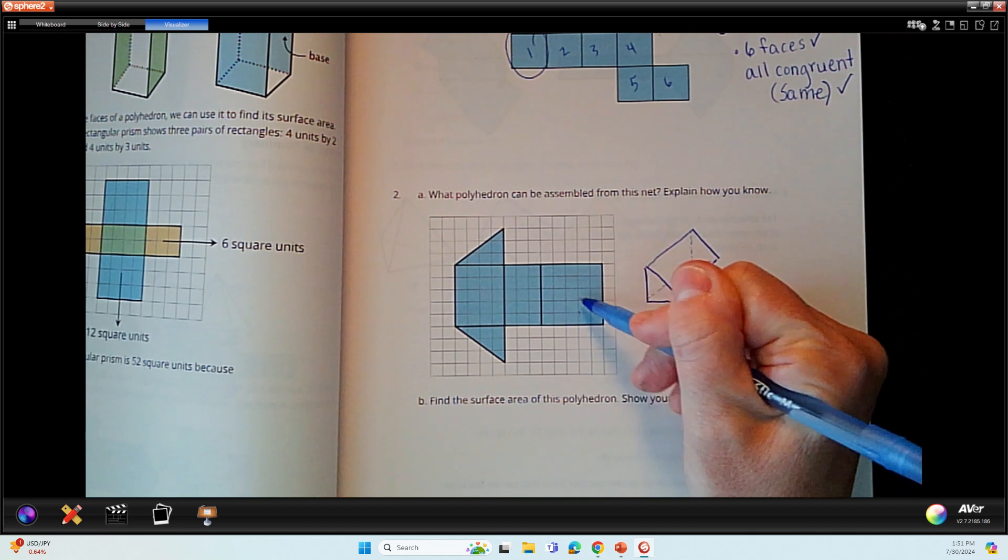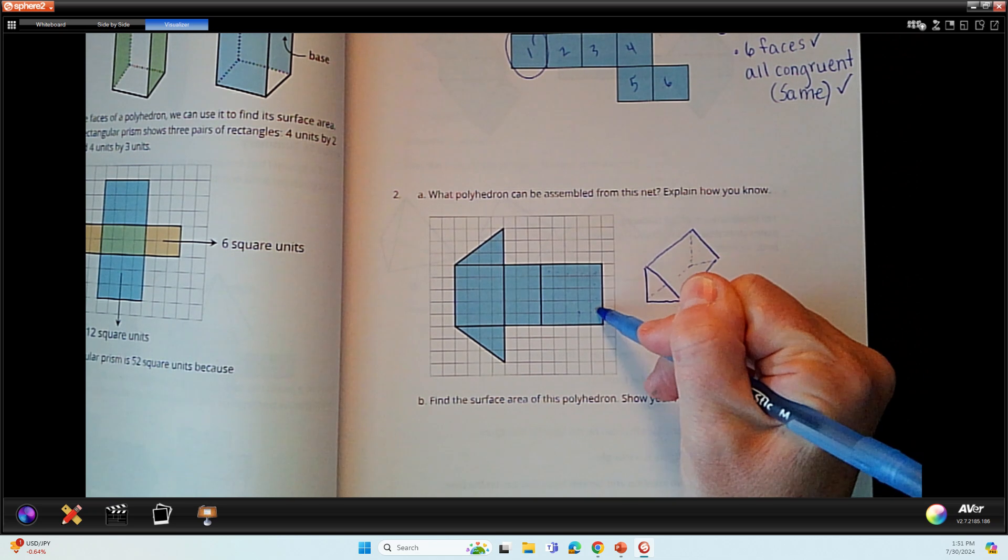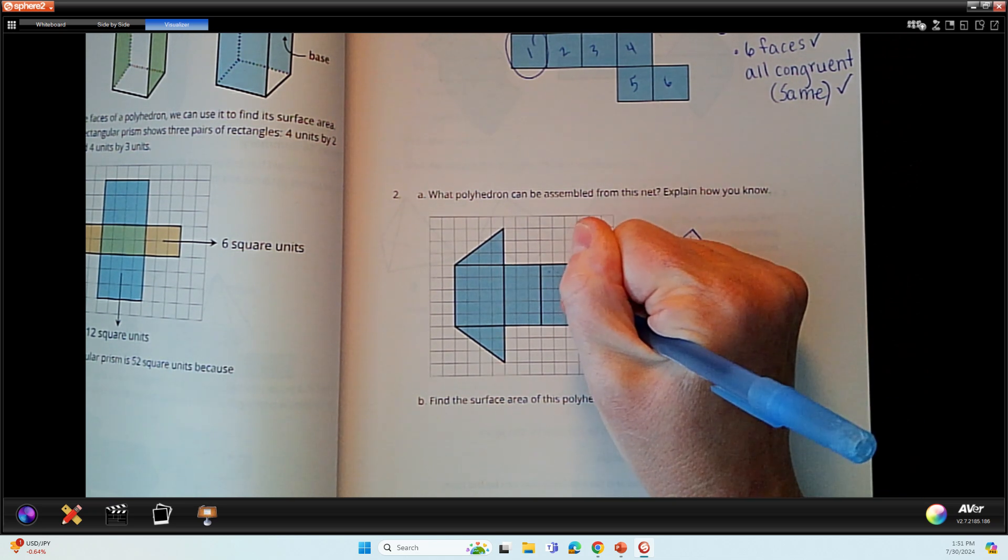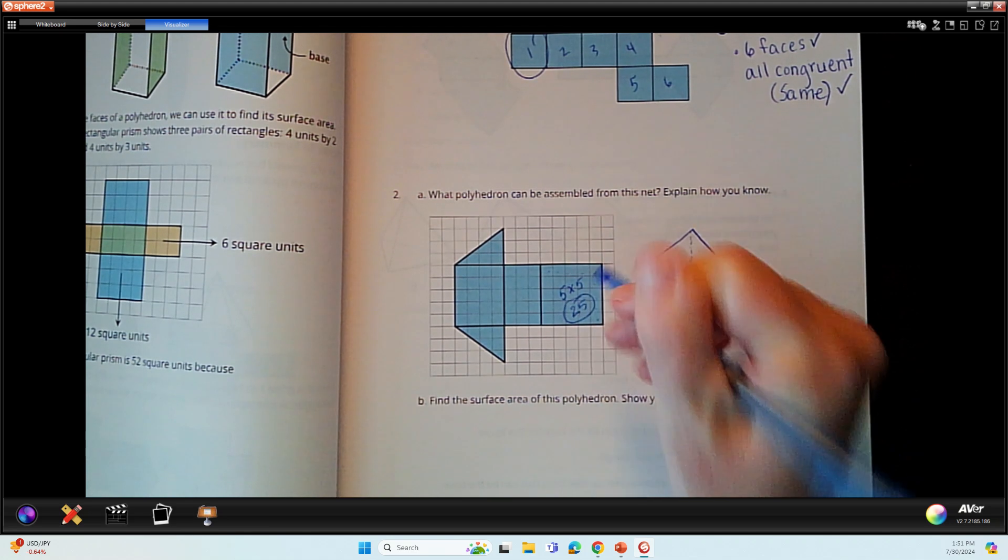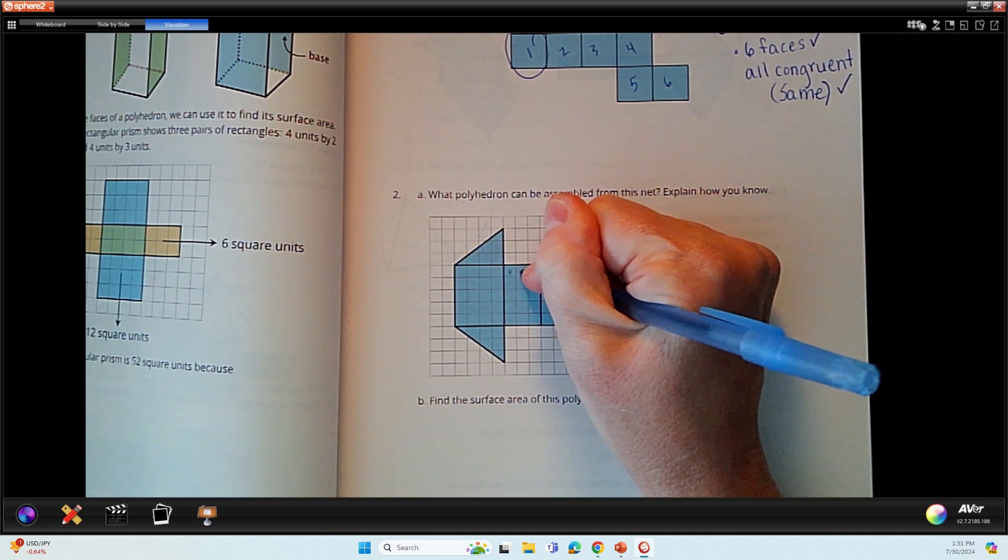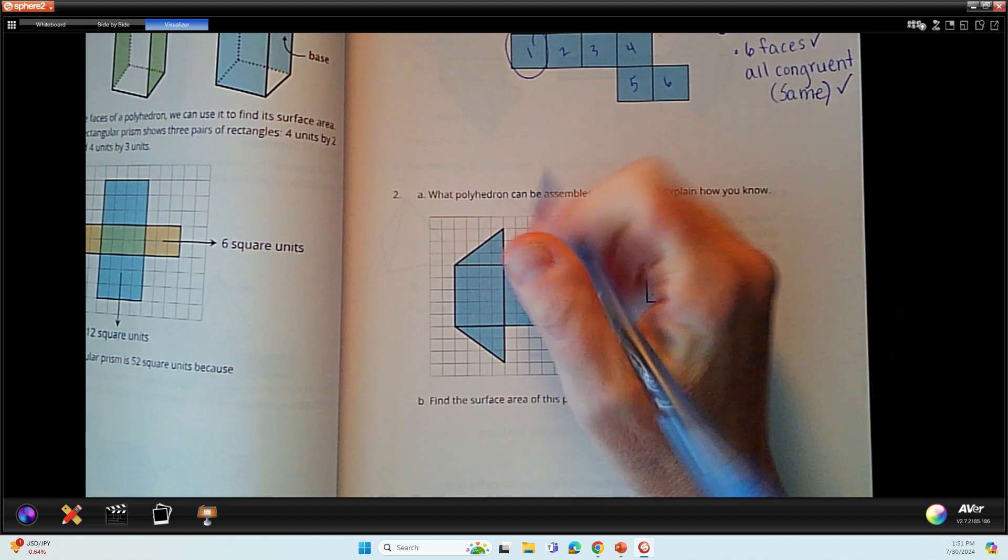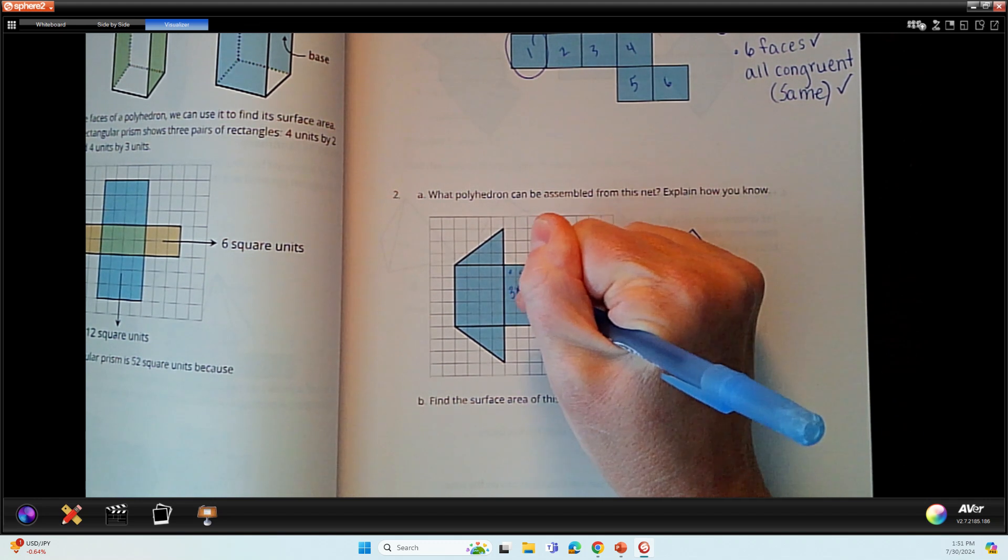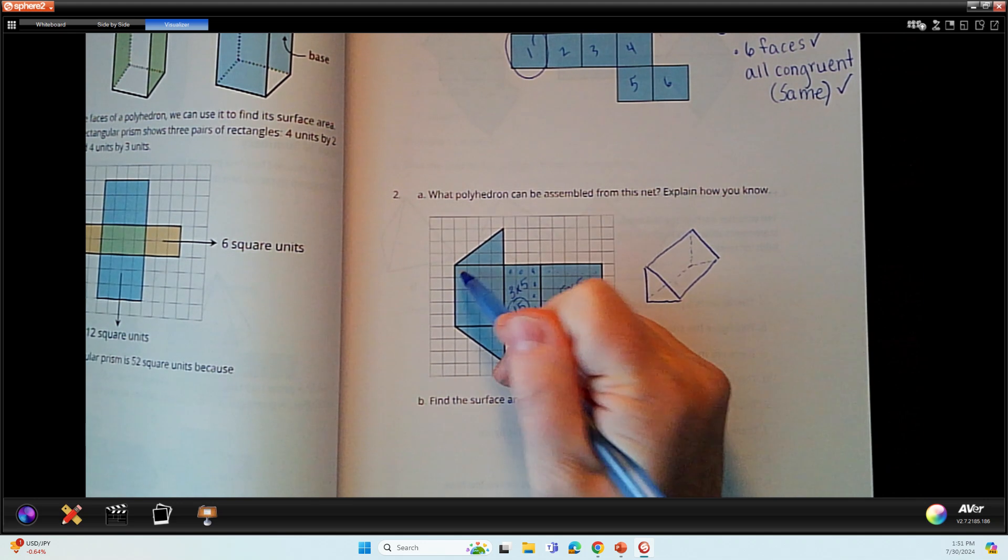So I can see, here's one of the faces. 1, 2, 3, 4, 5 by 1, 2, 3, 4, 5. So I'm going to write in here 5 times 5, which is 25, and I'm going to circle it. So I know that this is an area of 25. Now I can look at this one. This is an area of 1, 2, 3 by 1, 2, 3, 4, 5. So that would be 3 times 5, which is 15.